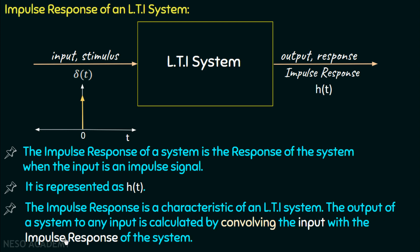The output of a system to any input is calculated by convolving the input with the impulse response of the system. So when we have the impulse response of an LTI system, we can calculate the output with respect to any input — we just have to convolve the input with the impulse response, and hence we will get the output. That is what we are going to discuss in the convolution property.